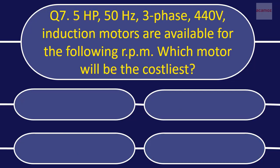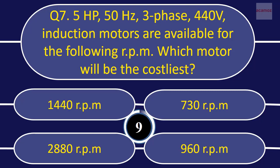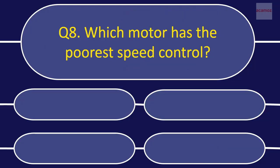Question 7: 5 HP, 50 Hz, 3-phase, 440V induction motors are available for the following RPM. Which motor has the poorest speed control?